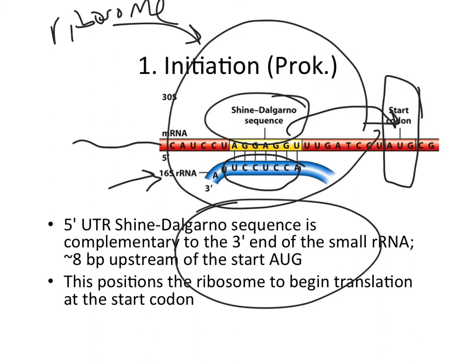You could imagine the 5' end of the messenger RNA could be up here and there could be some RNA sequence here, but translation would not start at this AUG because it's not to the right of the Shine-Dalgarno sequence. The ribosome becomes assembled at the Shine-Dalgarno sequence and then starts moving 5' to 3', and it starts translating when it encounters the first AUG reading left to right starting at the Shine-Dalgarno sequence.